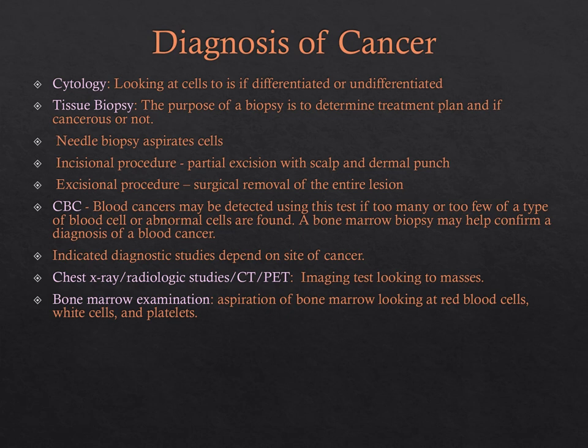In a PET scan, a small amount of radioactive glucose is injected into the vein, and the scanner rotates around the body, making a picture of where glucose is being used. Malignant tumor cells show up brighter because they're more active and take up more glucose than normal cells. Bone marrow aspiration can also determine a diagnosis by looking at red blood cells, white blood cells, and platelets.